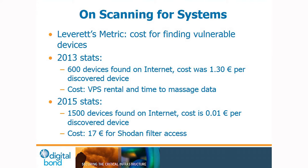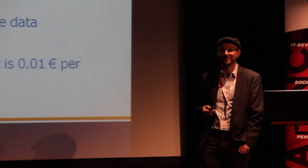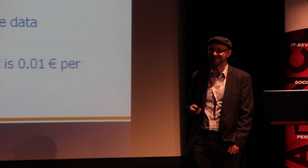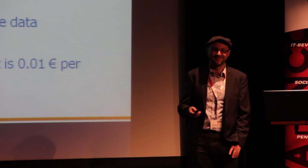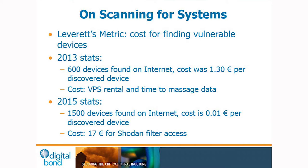Aaron Leverett had a great metric on the cost of finding vulnerable devices. In 2013, we published a paper together after scanning the internet for version 2 controllers and found 600 CODESYS controllers. Shodan was still relatively new and couldn't accept our scripts at the time, so we used Unicorn Scanner — which was buggy and horrible — plus NMAP. Given the cost of our virtual private servers and the time to massage the data, that came out to about one dollar or one euro thirty per device found.